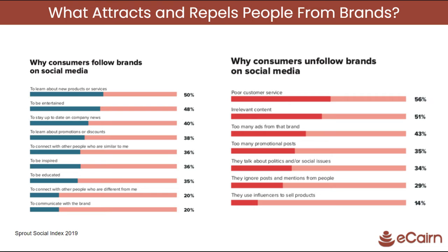What attracts and repels people from brands? When we look at why people follow brands, 48% of those people want to be entertained. They also want to stay up to date on company news. But really, 36% — a big third — want to connect with other people who are similar to them. Similarly, a third are looking to be inspired and educated. Now, why do people unfollow brands? More than half unfollow because of poor customer service, but also because of irrelevant content or too many ads and promotional posts. Also, 34% of people unfollowing brands do so because brands talk about politics or social issues.